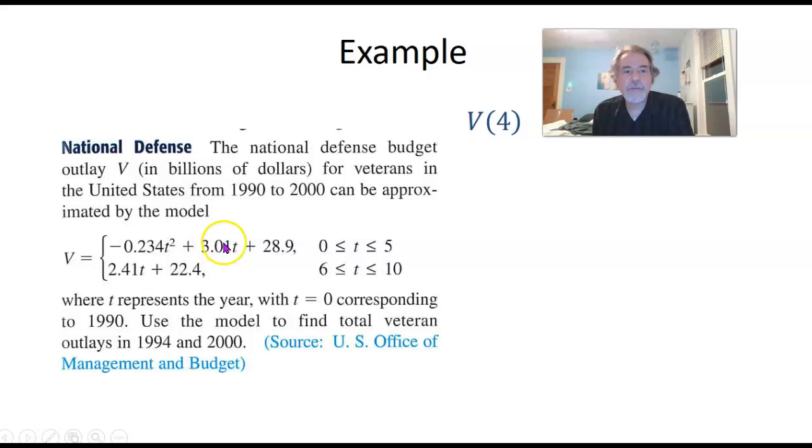So we're plugging 4 in for T here. We're calculating negative 0.234 times 4 squared plus 3.01 times 4 plus 28.9. And if you calculate that out, it comes to 37.196. So that means 37.196 billions of dollars for veterans in 1994.